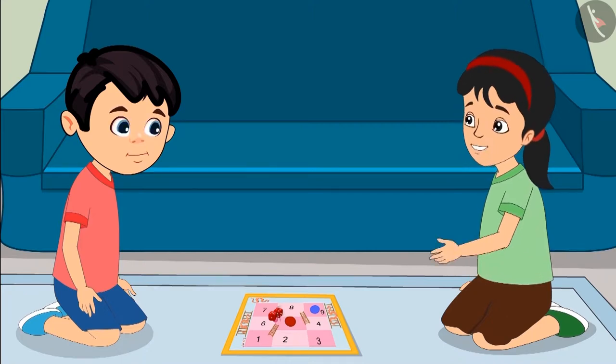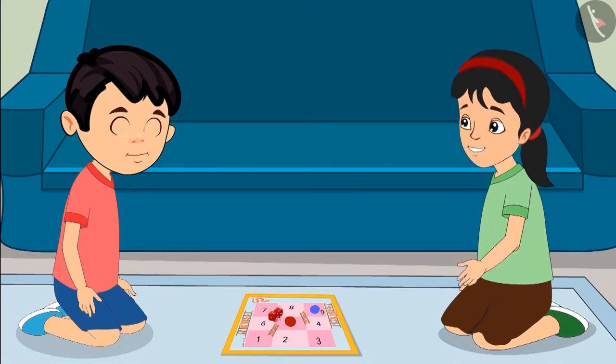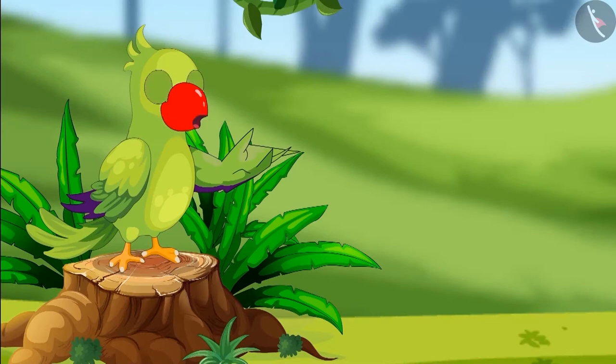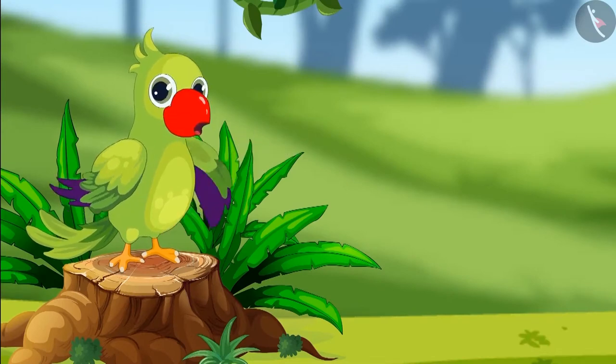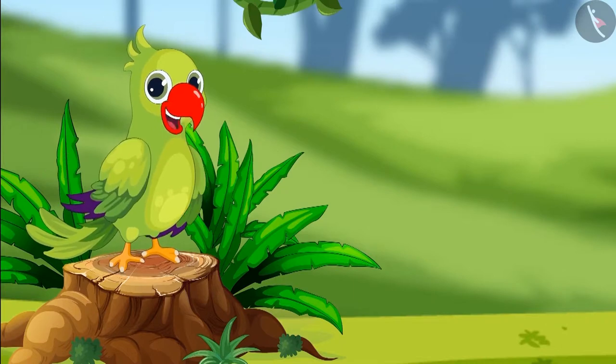Come on, let's start again. This time, properly add the numbers on both dice and move your piece forward. So children, I hope you had fun watching the game of snakes and ladder. You too can now add 2 numbers like Chotu and Pinky, isn't it? That's all on this topic.